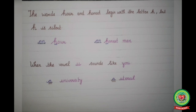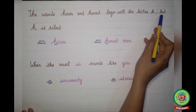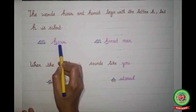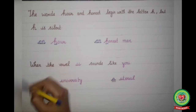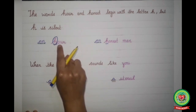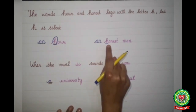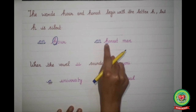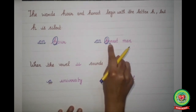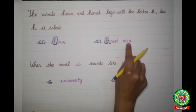Kids, I want to tell you one thing. The words 'hour' and 'honest' begin with the letter H, but H is silent here. So we will never use 'a' before 'hour' — we will always use 'an', because H is silent and the word begins with O, which is a vowel sound. So we write 'an hour'. Similarly, 'an honest man' — H is silent and the word starts with O, which is a vowel, so we use 'an honest man'.